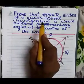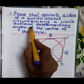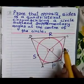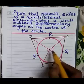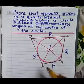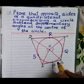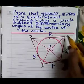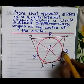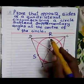Opposite sides of a quadrilateral circumscribing a circle subtend supplementary angles at the centre of the circle. A circle with centre O is given, and a quadrilateral ABCD circumscribing the circle — that is, touching the circle. The four sides AB, BC, CD, and AD are touching the circle at points P, Q, R, and S — so the four points of contact are P, Q, R, and S.